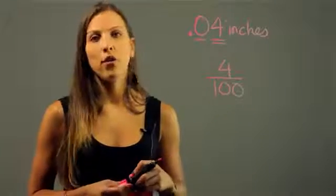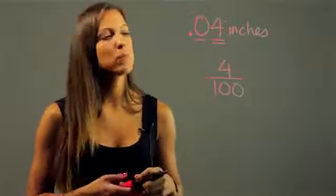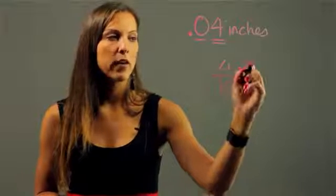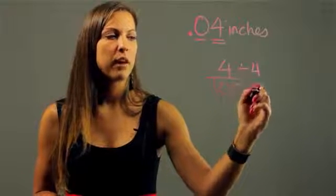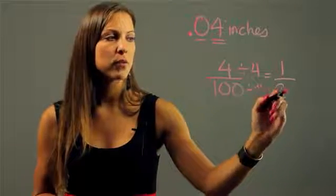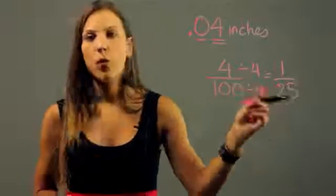And then what you can do further is just reduce that fraction, because you always want to simplify your fractions. So I notice that four and 100 are both divisible by four. So I can divide by four, divide by four. Four divided by four is one, 100 divided by four is 25. So it becomes one over 25.